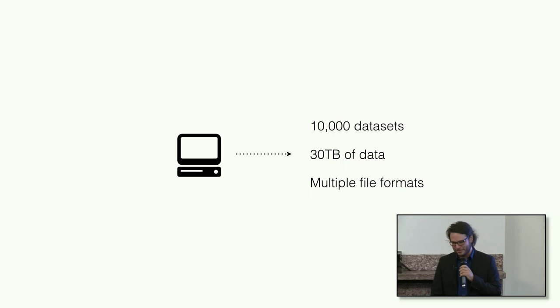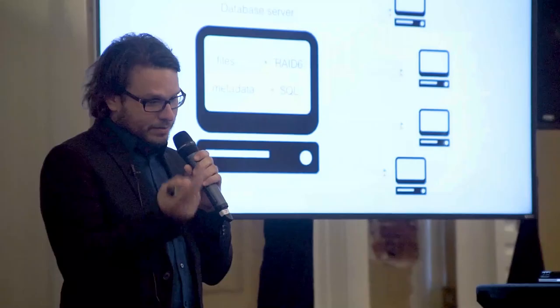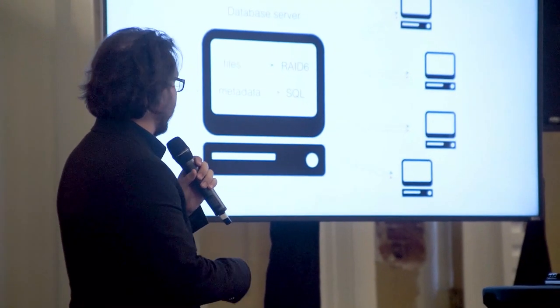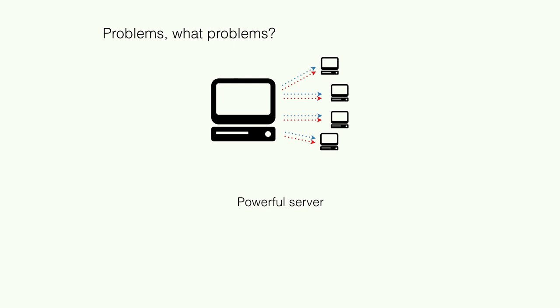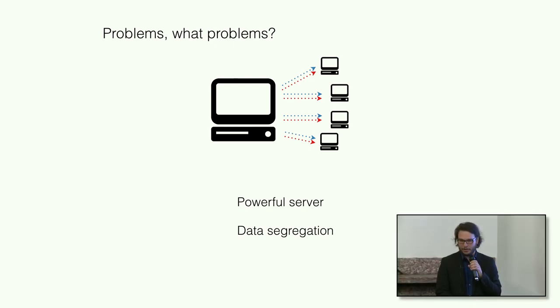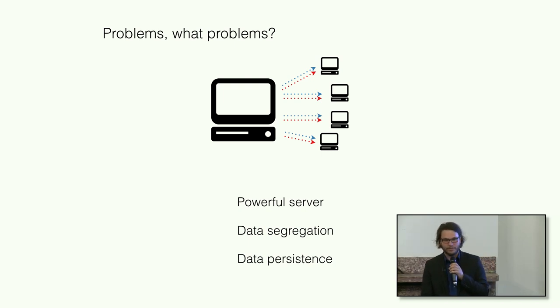I was interested in different types of sharing possibilities. The obvious answer is to put your files in a RAID 6 system, put your metadata in a SQL database, build an API, and have users interact with the data via that API. But that has some problems. In academia, any sort of powerful server might be prohibitive because of costs. There's a problem of data segregation — if everybody puts their data on their own server, users need to visit each lab's website. And there's a problem of data persistency: if a lab loses funding, the data might be inaccessible or even lost.